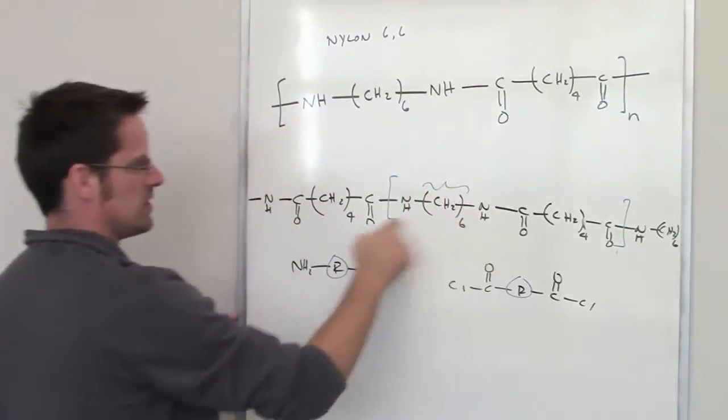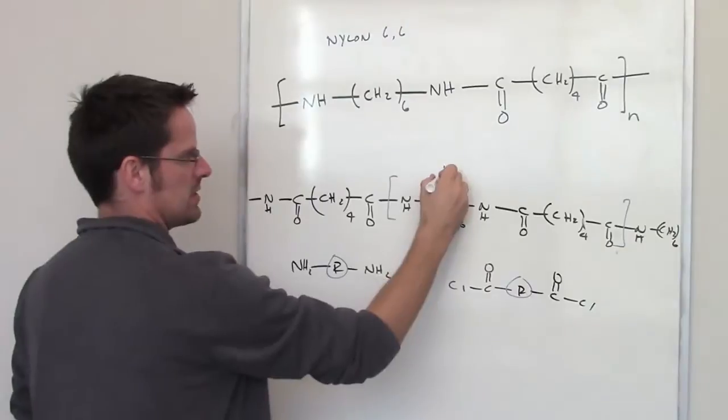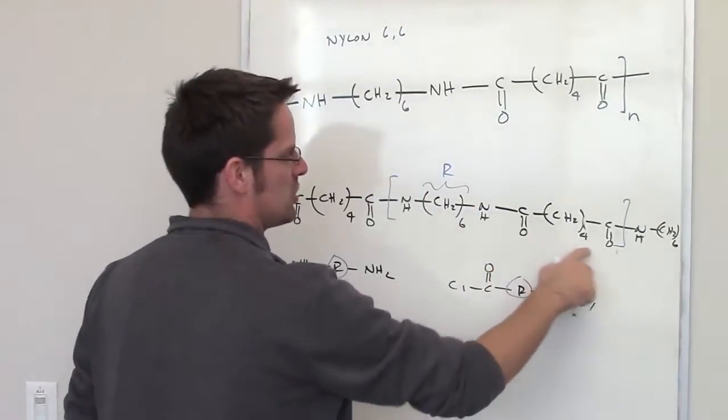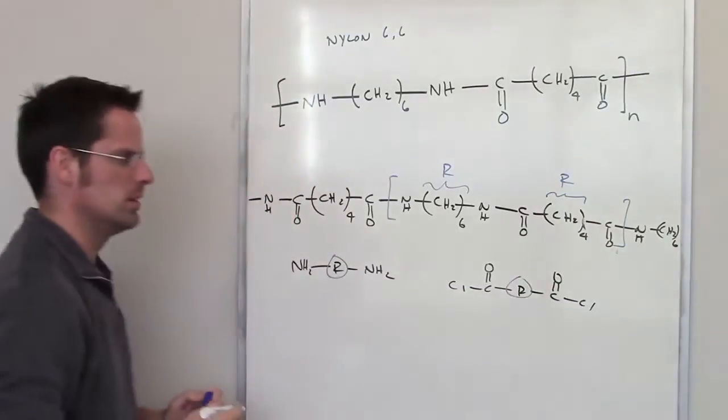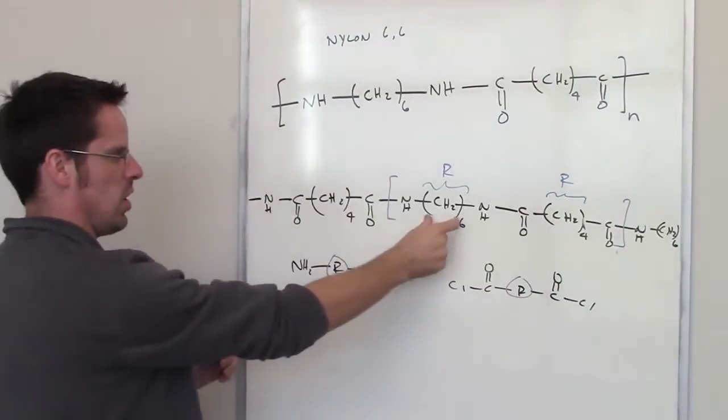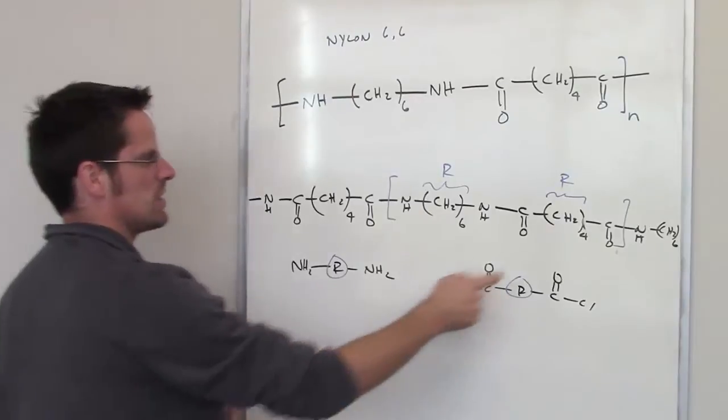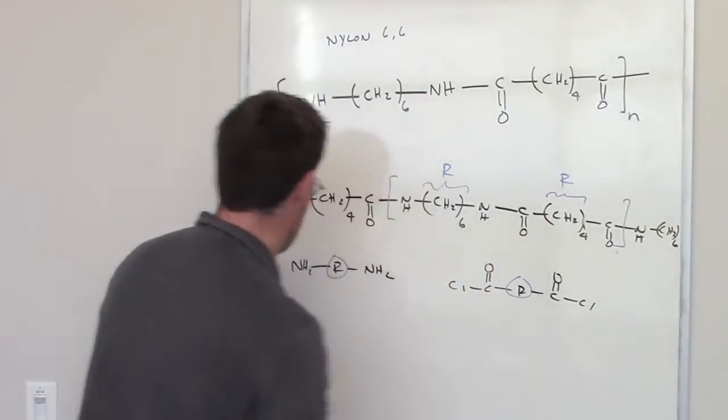In this particular example, the R between the two nitrogens is this, and between these two carbon oxygen double bonds, this is our R. I've got this R between these two nitrogens, and this R between these two carbon oxygen double bonds.